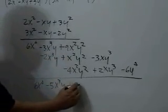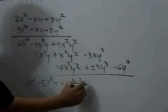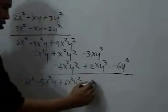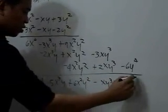Negative 3 plus 2 is negative 1 or negative xy³, and then we bring down negative 6y to the fourth.